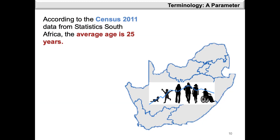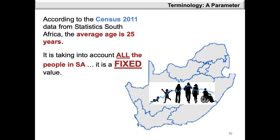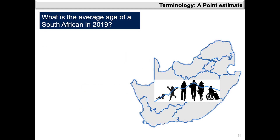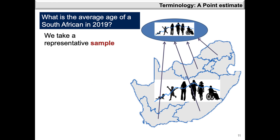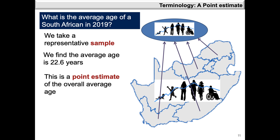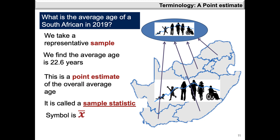According to the 2011 census data from Statistics South Africa, it was reported that the average age is 25 years. Since all the people in South Africa were taken into account when this value was calculated, this is considered a fixed value. We refer to this as a parameter and we'll denote it by the Greek symbol mu. But if we're interested in the average age of a South African in 2019 and may not have all the population data, we can take a representative sample and we find that the age is 22.6 years. This is a point estimate of the overall average age and we refer to it as a sample statistic, denoted by the symbol X bar.